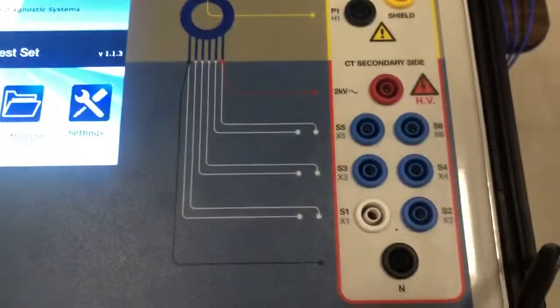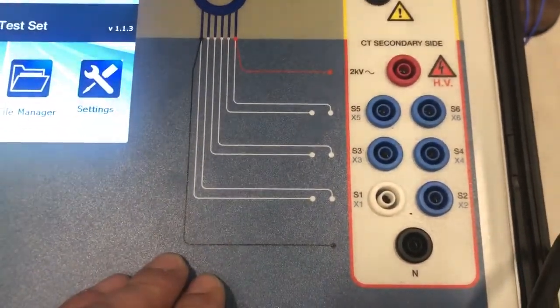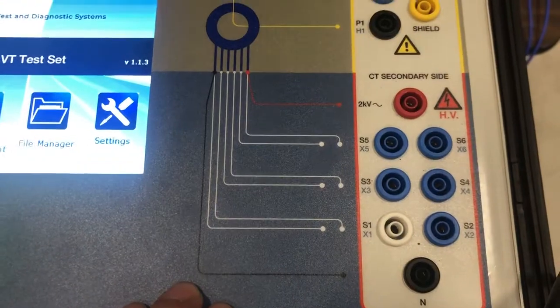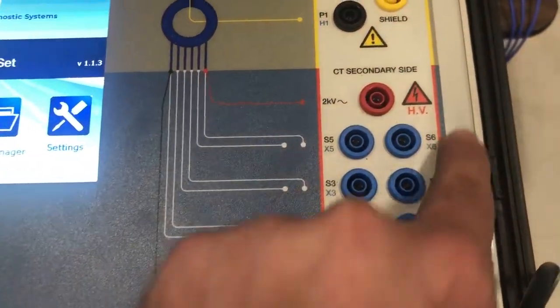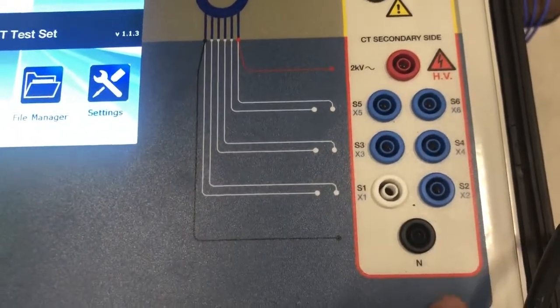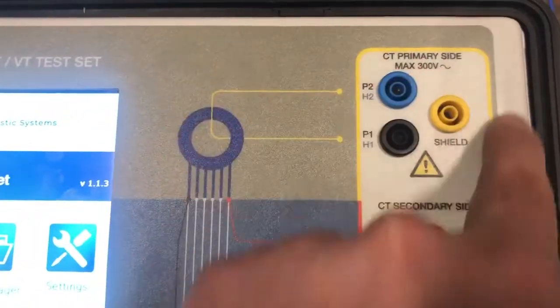First of all, since we are using volt method to test the ratio, the red sign here says that this is where we will be doing the generation from. So we will generate on the secondary side and we will measure on the primary side.